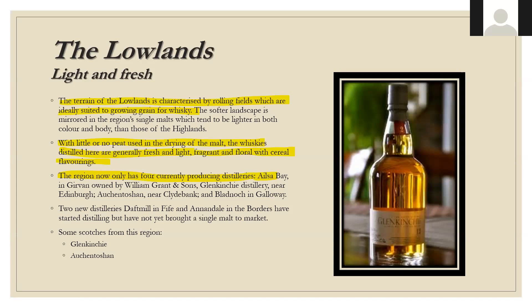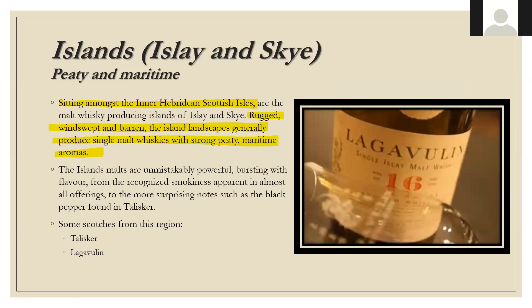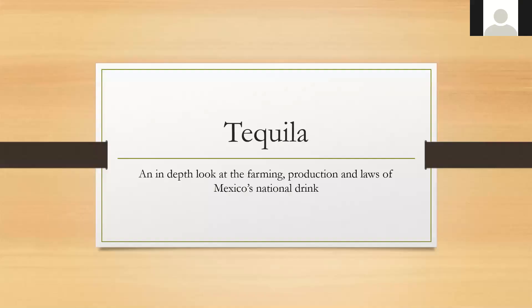The Islands — starting with Islay and Skye — are peaty and maritime. Sitting among the Inner Hebridean isles, the malt whiskey-producing islands of Islay and Skye are rugged, windswept, and barren. The island landscapes generally produce single malt whiskeys that are peaty, maritime, and rich. I'd always describe it as a car exploding in front of your face — burnt rubber, paint thinner, gasoline notes on the nose. It doesn't sound super appealing, but people who love Talisker, Lagavulin, or Laphroaig drink those whiskeys for a reason — they're powerful.